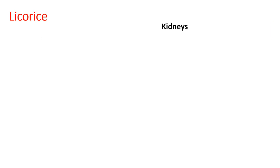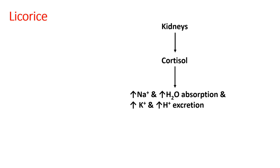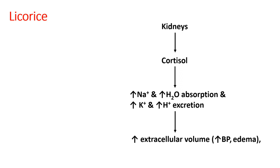Here we will first look at the normal function of the kidney. Kidneys release cortisol, and when cortisol is released it increases sodium and water absorption from the distal convoluted tubule. Simultaneously, it pushes potassium and hydrogen into the urine — meaning urine potassium and hydrogen levels are increased. If cortisol does this continuously, it can lead to increased extracellular volume because sodium and water have been absorbed, causing water around the cell to increase. This can further increase blood pressure and edema, generally affecting lower extremities — so swollen feet can be a major symptom.